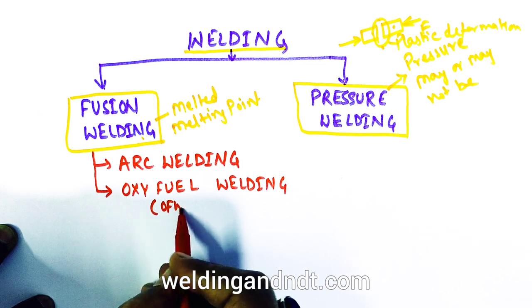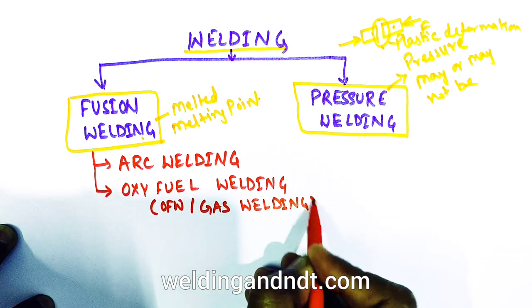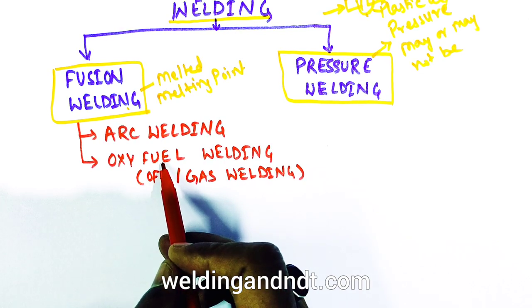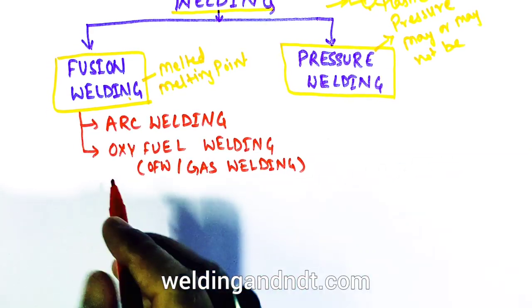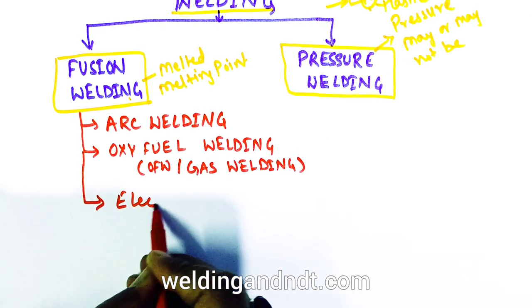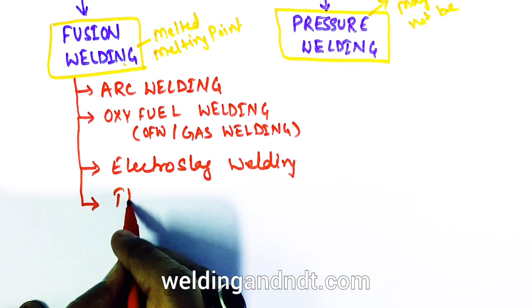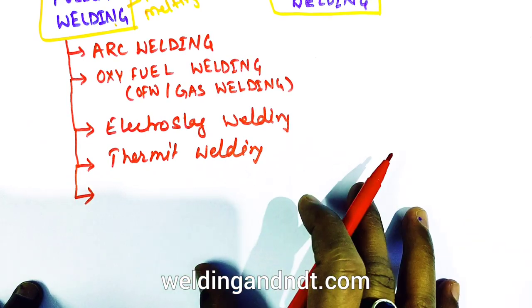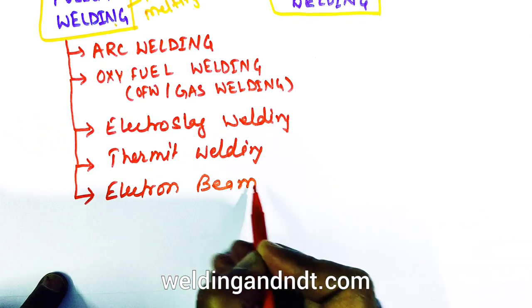The second fusion welding process is oxy-fuel welding, also called OFW or commonly gas welding. One oxygen cylinder and one fuel cylinder are used — mostly acetylene — making it oxy-acetylene welding, or OAW. The third is electro slag welding, the fourth is thermite welding, and the fifth is electron beam welding.